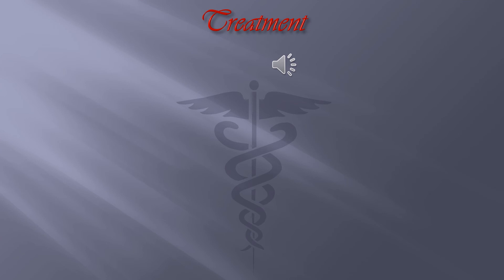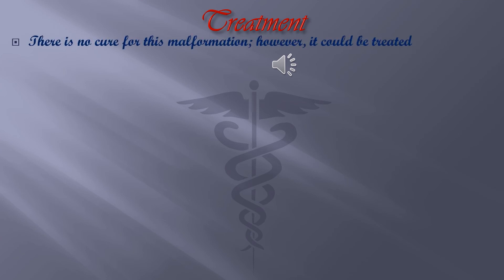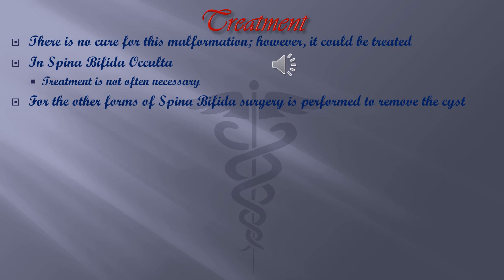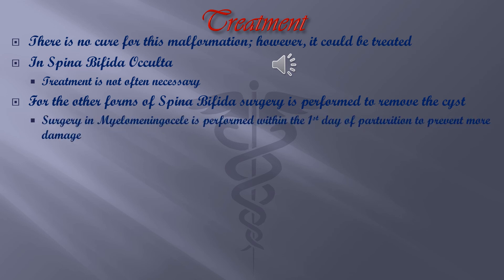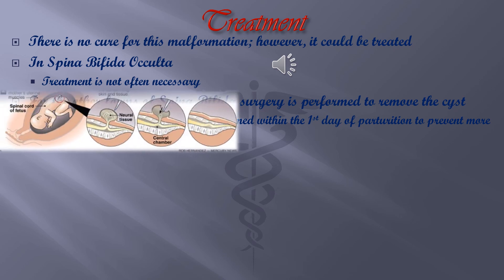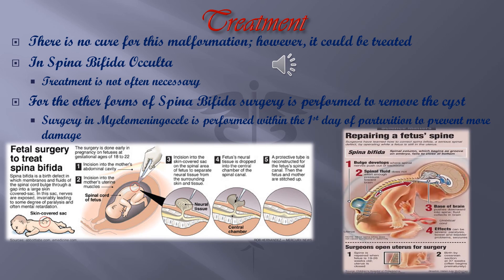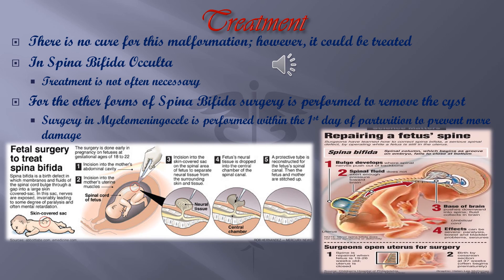Treatment: there is no cure for this congenital malformation. However, it can be treated. In Spina Bifida Occulta, treatment is not often necessary. For the other forms, surgery is performed to remove the cysts. In Myelomeningocele, surgery must be performed within the first day of birth to prevent any further damage to the neural tissues. The pictures at the bottom show different procedures done to correct Spina Bifida.